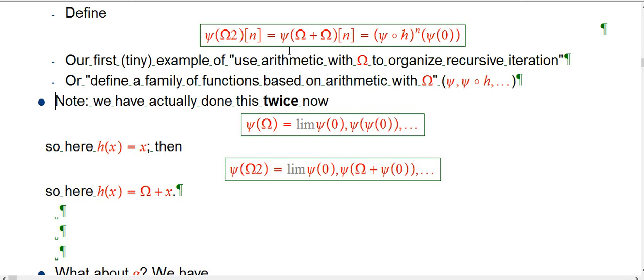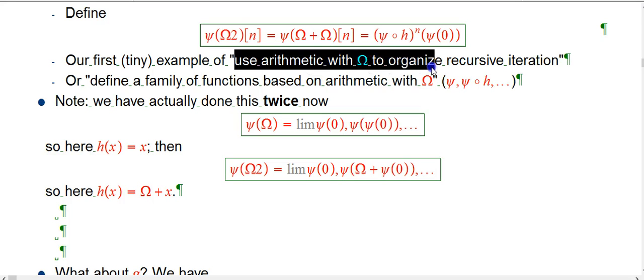So I just said that this is our first little example of this idea of use arithmetic with omega to organize recursive iteration. Not quite true, except we've actually done it twice now, but one was a very degenerate example.